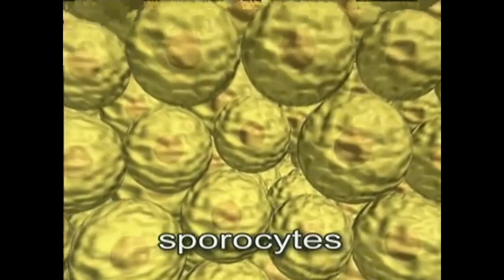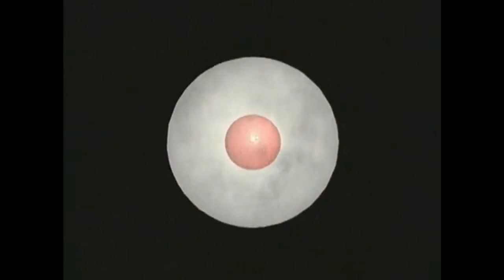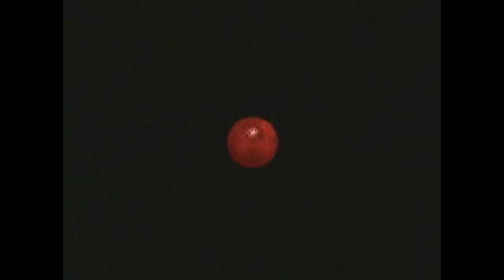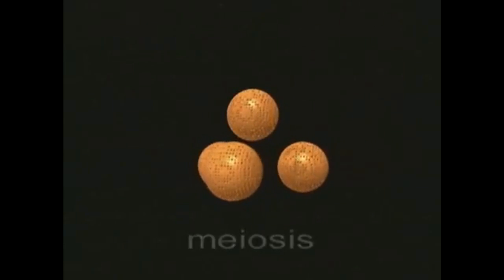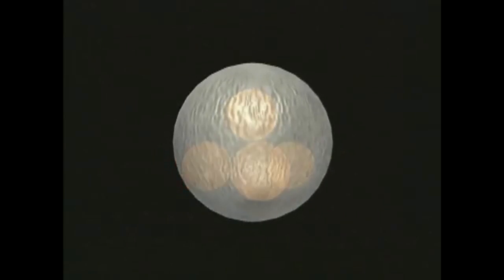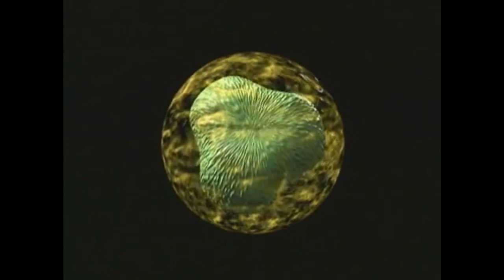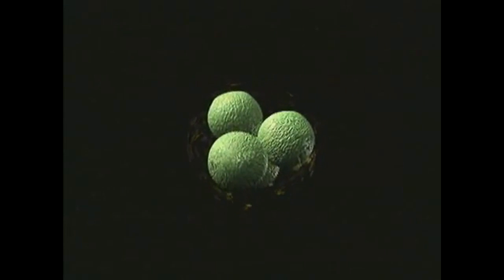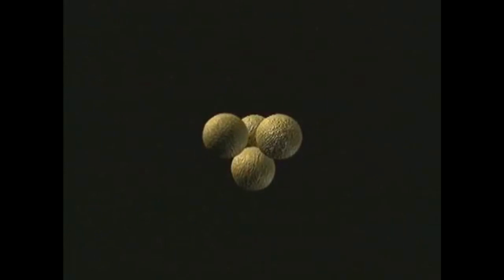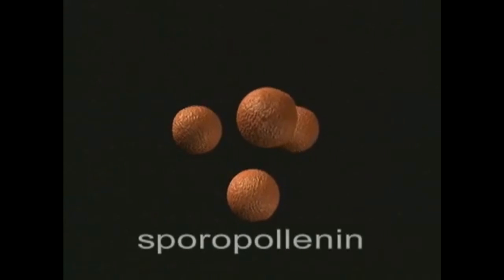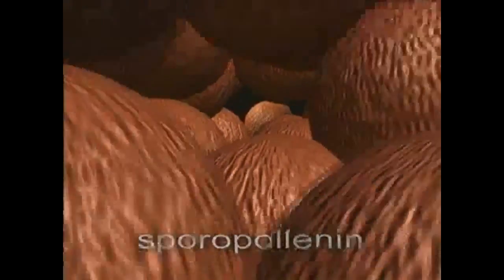The capsule contains fertile tissue consisting of sporocytes. Inside the nucleus of each sporocyte, there are two sets of chromosomes. The nucleus divides by the process of meiosis, forming four haploid nuclei. Thin walls now form around each nucleus, resulting in a cluster of four cells, known as the tetrad. A deposit of sporopolinin produces cells with thick resistant walls, called spores.